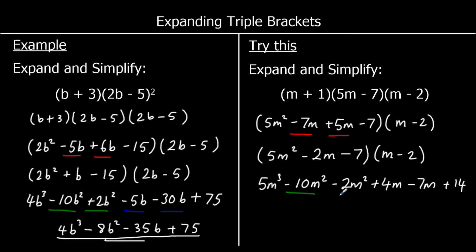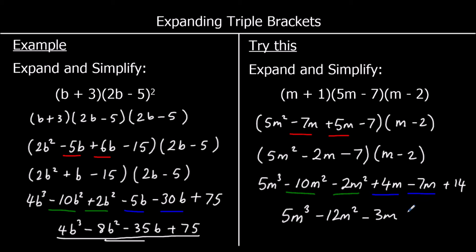And collecting like terms. I've got two m squared terms and two m terms. So I've got 5m cubed. Negative 10m squared take away 2m squared is negative 12m squared. I've got 4m take away 7m, which is negative 3m. And positive 14 on the end.